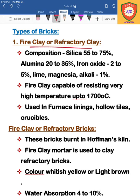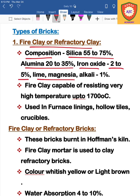The first type is fire clay or refractory clay bricks. The composition of fire clay or refractory clay is: silica 55–75%, alumina 22–35%, iron oxide 2–5%, and lime, magnesium, and alkalis approximately 1%.